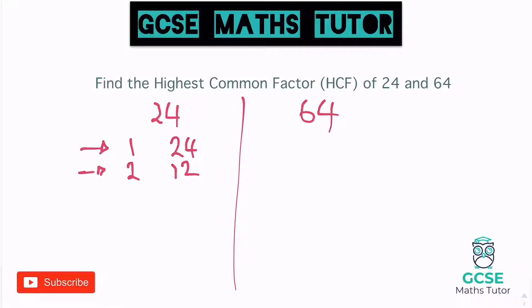So I'm going to start with the next number, three. Three does go in — it goes in eight times, giving three and eight. And now I only need to look at numbers between three and eight. The next number, four — four goes in six times, giving four and six. The only other number I have to choose from is between four and six, and that number's five, which doesn't go in. So I'm happy I've got all the factors of 24.